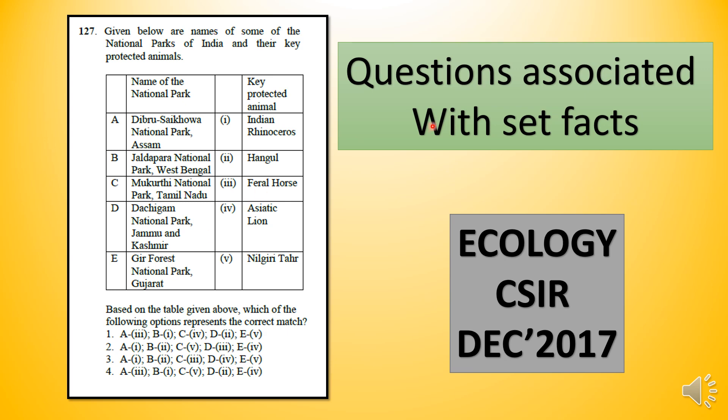Only 2 options help you rectify that the correct answer is the fourth, and you can match. So these are set facts associated questions — remember that if you know these things, then it will be extremely helpful. Guys, you understand that if we keep doing things this way, there will be a high probability that 25 questions will make a big difference, so we need to build habits.